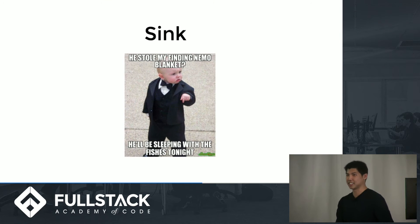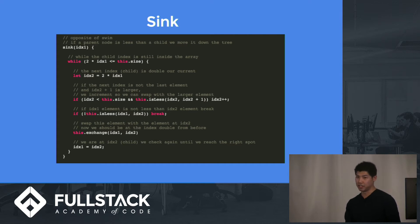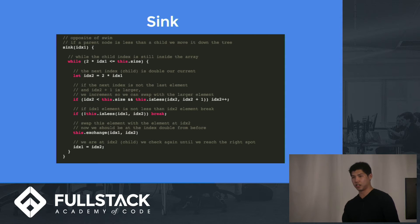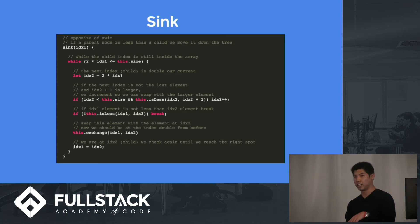The next function is sink, which is the exact opposite of swim — it pushes an element down the heap. You iterate until the end of the array, doubling the index each step. The key difference in the swap condition is that you want to swap with the greater child node. So if the right child node is greater than the left child node, you increment the index and then swap with that index. Then you move down the array to the next index at the child node.